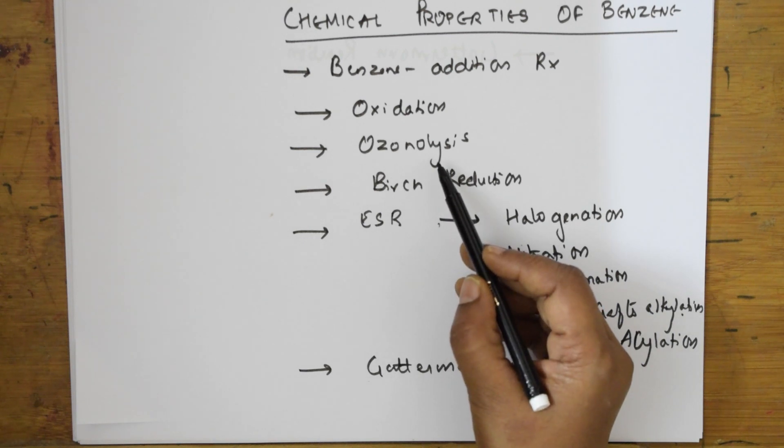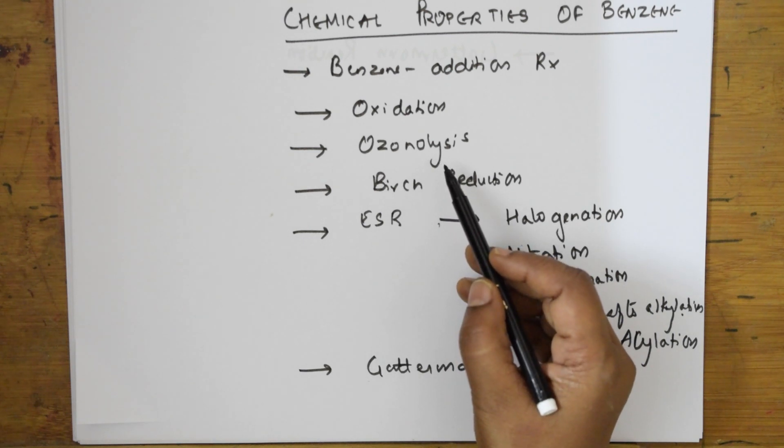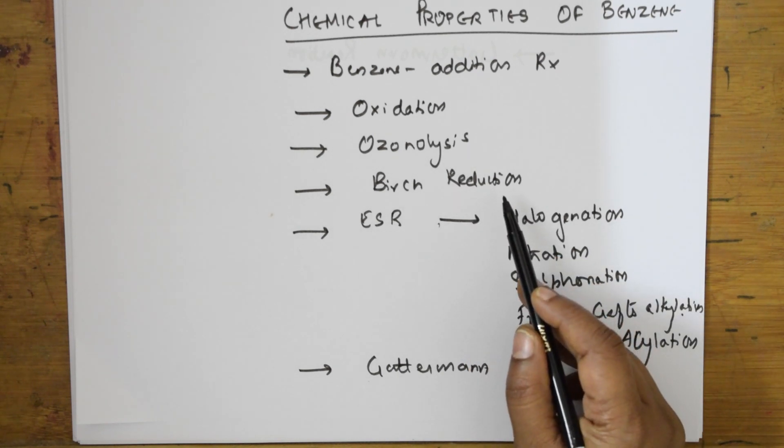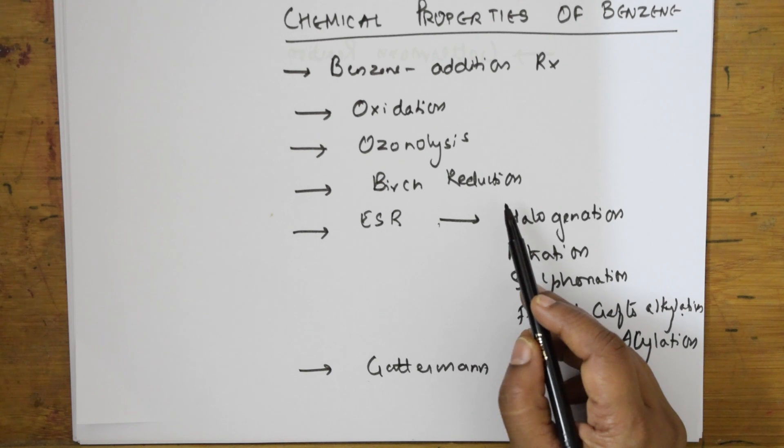I'll also be showing you ozonolysis reaction, very important, and the formation of glyoxal. There's an important reaction called Birch reduction - I'll be showing this reduction in the presence of ethanol and sodium metal. I'll be showing the mechanism of this.